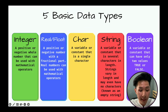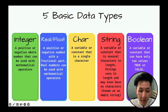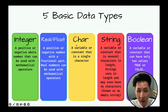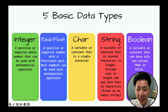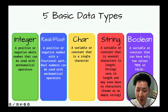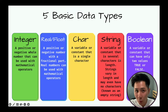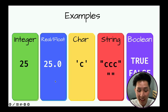The five data types are: integer, which is a whole number — either positive or negative; real or float, which is a decimal number; char, which stands for character; string, which is a bunch of characters forming a word — strings vary in length and may even have null characters, known as an empty string; and boolean, which is a constant that can only have one of two values, either true or false.